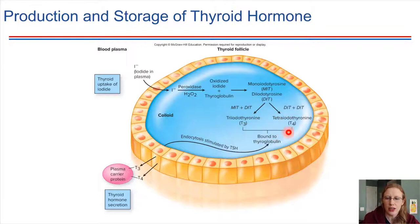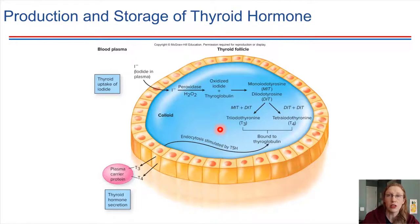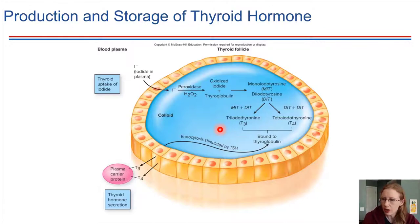The combination of iodide and thyroglobulin allows us to produce T3 and T4 — those numbers just indicate how many iodines are attached onto that particular molecule. T3 and T4 hang out in the colloid space and are kept there in reserve, so that if your dietary iodine dips low for a while, we still have some reserves of these hormones available.